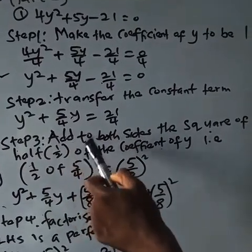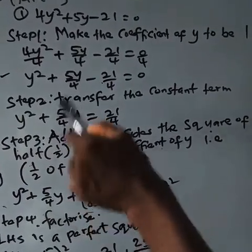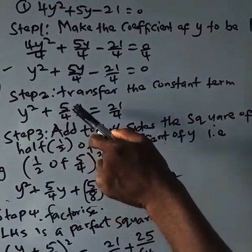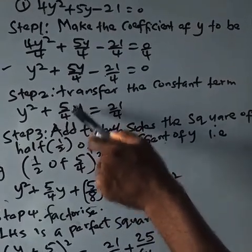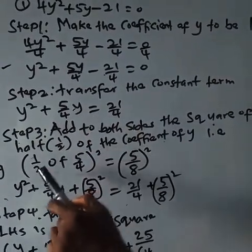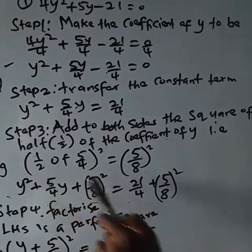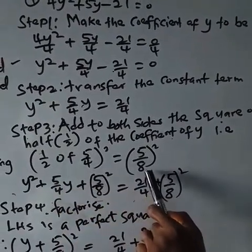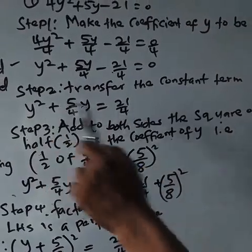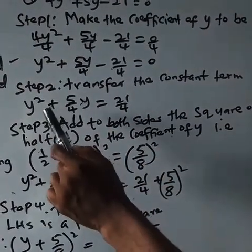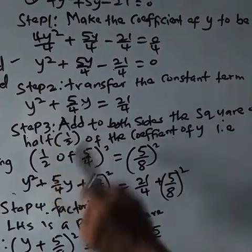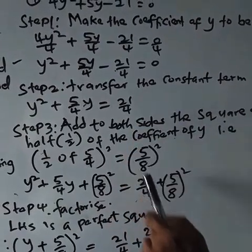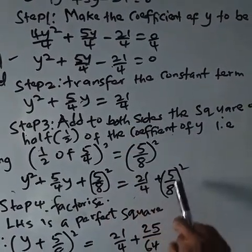Step three: add to both sides the square of half of the coefficient of y. The coefficient of y is 5 over 4. So half of 5 over 4 is 5 over 8, all squared. Adding to both sides, we have y squared plus 5 over 4y plus (5 over 8) squared equals 21 over 4 plus (5 over 8) squared.